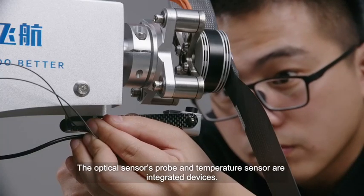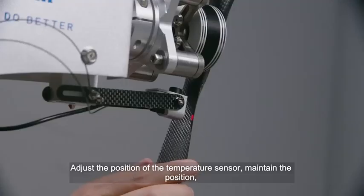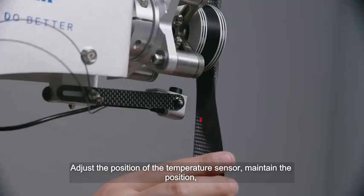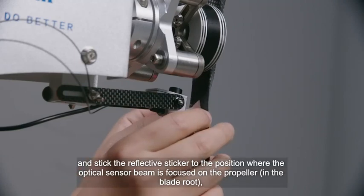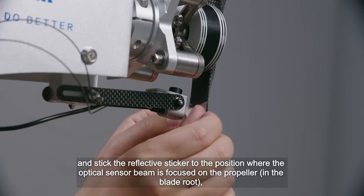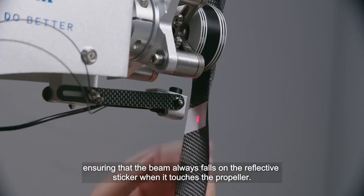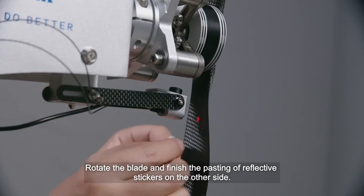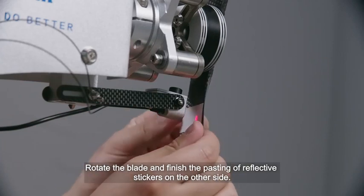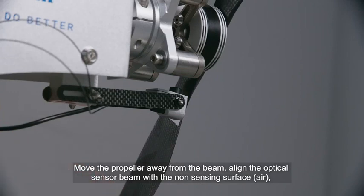The optical speed sensor probe and temperature sensor are integrated devices. Adjust the position of the temperature sensor. Maintain the position and stick the reflective sticker to the position where the optical speed sensor beam is focused on the propeller. Ensuring that the beam always falls on the reflective sticker when it touches the propeller. Rotate the blade and finish the pasting of reflective stickers on the other side.